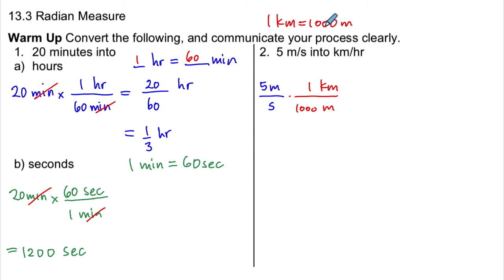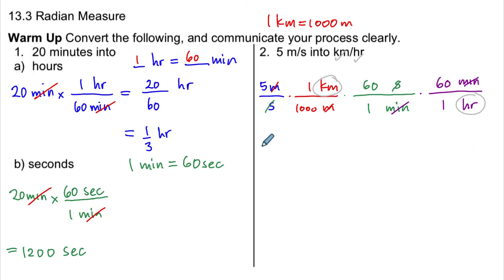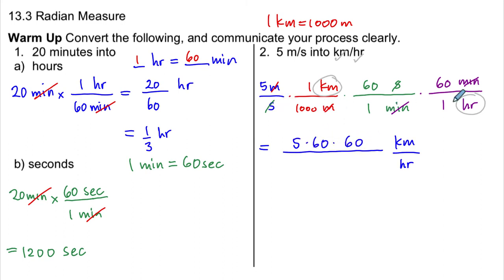We translate that into a fraction to multiply by, which gets rid of the meters. Then we need to take the seconds and convert to hours — I'll do this in two steps. First, get rid of seconds and introduce minutes: 60 seconds equals 1 minute. That gets rid of seconds, but now we have minutes. We use another conversion from minutes to hours: 60 minutes equals 1 hour. So we're seeing where each unit goes as we simplify, canceling them until we're left with hours. After all this, we have kilometers on top and hours in the denominator. Now we tidy this up into one fraction, putting the unit of kilometers per hour at the end. So I'll have 5 times 60 times 60 on top over 1,000 times 1 times 1.